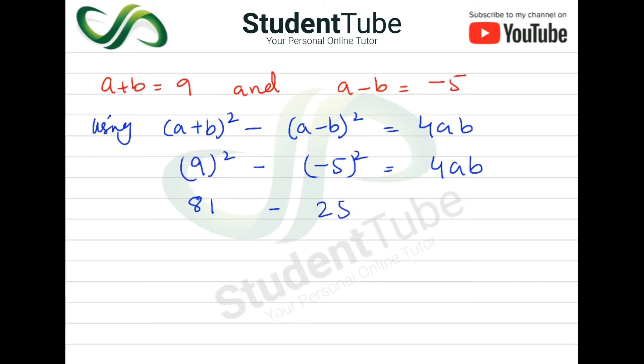So 81 minus 25, value comes to 56. And 4AB is equal to 56. Answer. It was a very easy question. I hope you will understand.